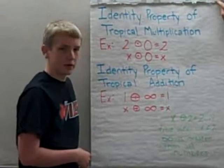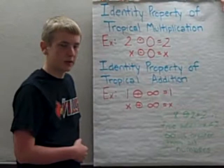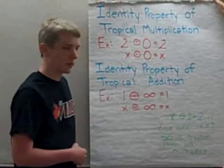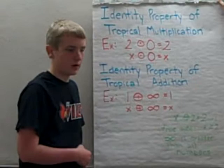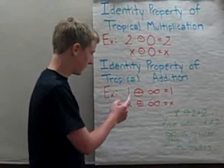The identity property of tropical addition states that any number tropically added to infinity will equal itself, because the answer for tropical addition is always the lowest number, and since infinity is greater than all numbers, the answer will always be the number that was added to infinity.